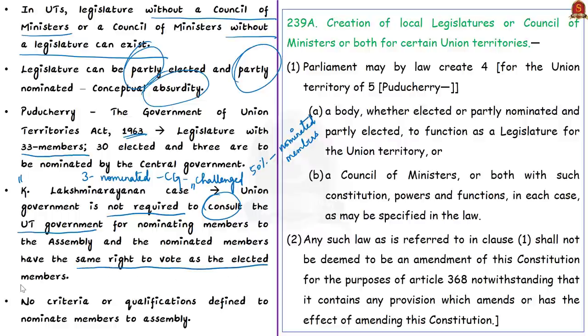Also note that the 1963 Act does not provide any criteria or qualifications to nominate members to the assembly. So if a different party runs the government in the union territory, this provision can be used by the union government with vengeance, as happened in Puducherry.